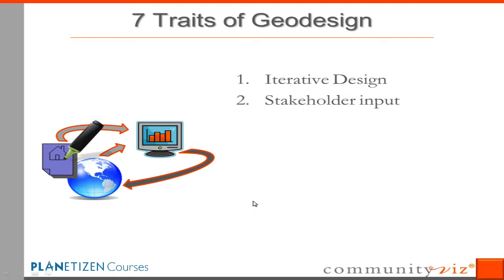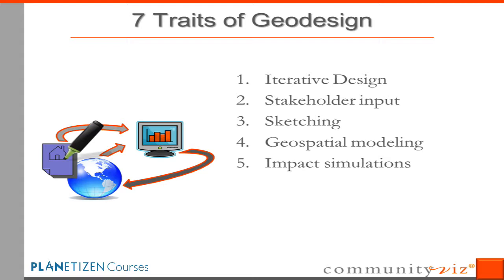The second trait is that it emphasizes stakeholder input in the broadest sense of the term. Third, it seizes on the idea of sketching — working with tentative ideas that you expect to change and refine. Fourth, it uses geospatial modeling; it's geospatially aware — that's the 'geo' in geodesign. Fifth, it uses impact simulations or impact models to estimate the potential effects of a sketch should that sketch actually be implemented. The feedback it provides as a result of those models is fast — fast enough to support a normal human conversation.